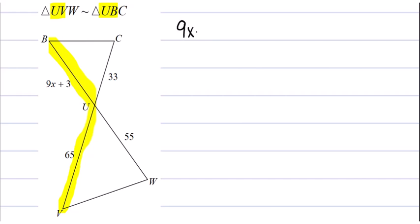So we can set up our proportion that way. I'm going to put the 9X plus 3 on top. And that equals 33 over 55, I'm pretty sure. Match up your letters. This is U to C. So that is on this triangle. This is going to be U to W, which is the 55. So 33 over 55.